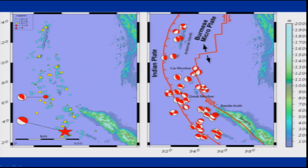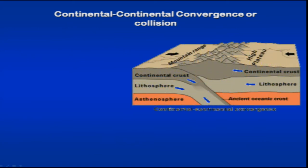This shows how the plate boundaries are seen close to the Indian subcontinent. The southernmost tip is Carnicobar and then we move further into the Andaman Islands. Many earthquakes that occur are aligned along the trench. Now coming to the final type — continental-continental convergence or collision — the best example on earth is the Alpine-Himalayan mountain chain.